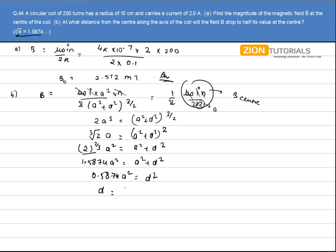The value of D comes out to be square root of 0.5874 A square. Now, the value of A is 0.1 meter.